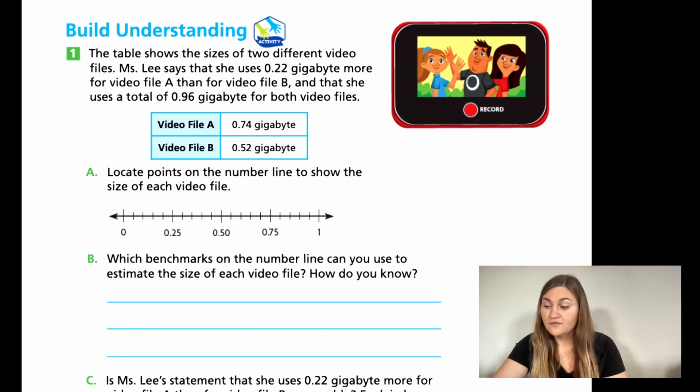Remember quarters. And then video file B is 0.52. Again, remember quarters. How many quarters? How many cents would you have if you have two quarters? 50. So for A, locate points on the number line to show the size of each file. So go ahead and make dots where the 0.75 and 0.52 are supposed to be.